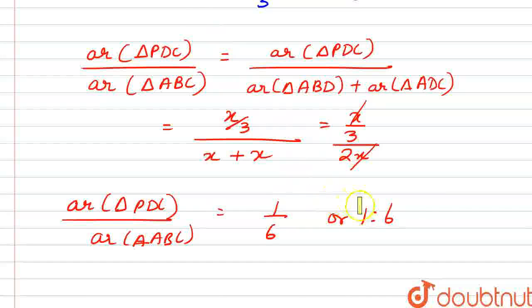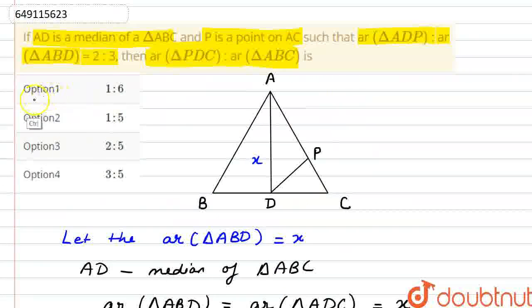That means we have our ratio. So if we check out the options, then our correct option will be Option 1, that is 1:6. This is our final answer. Thank you.